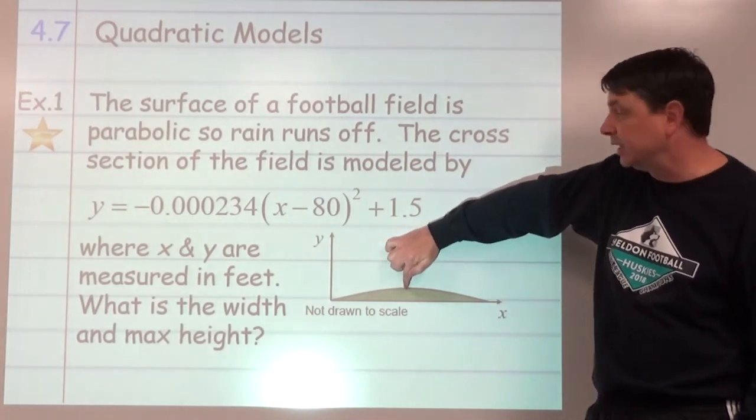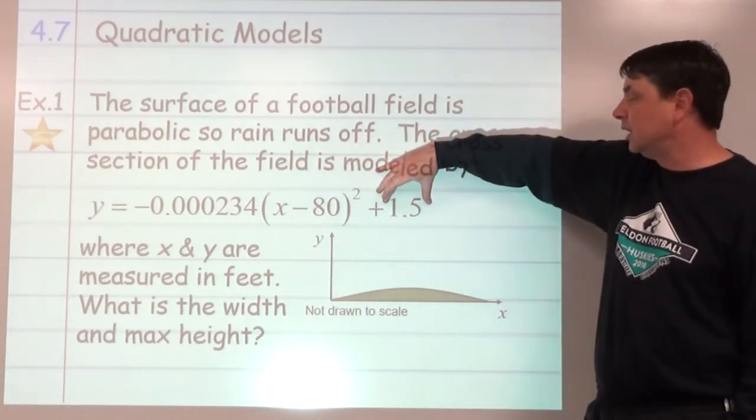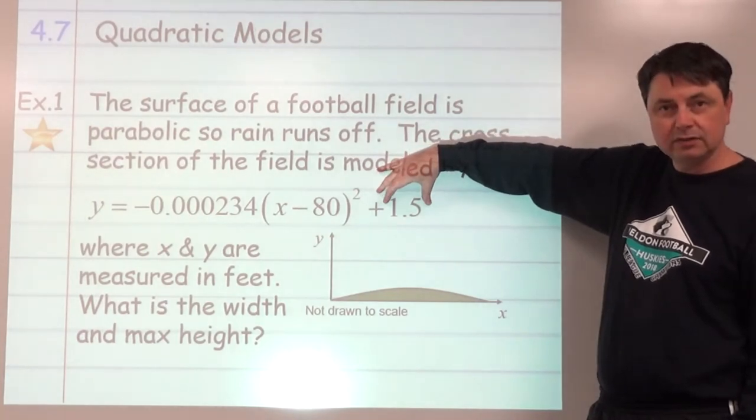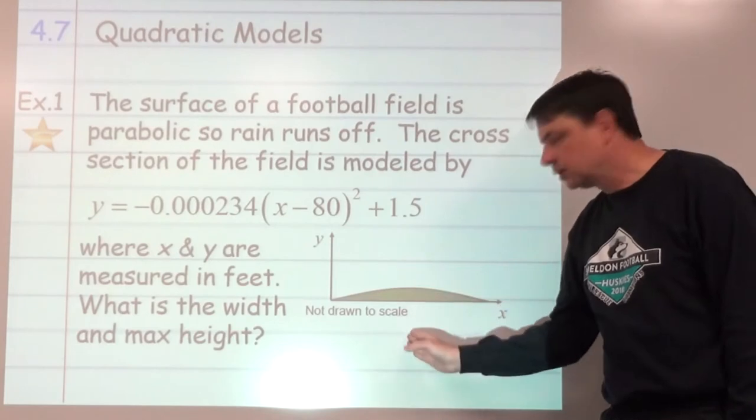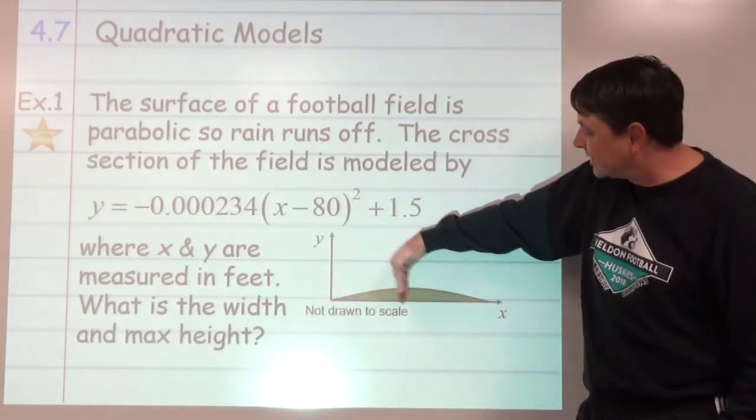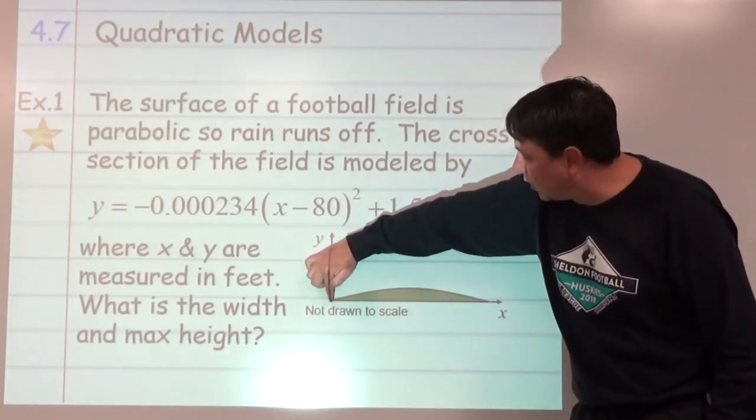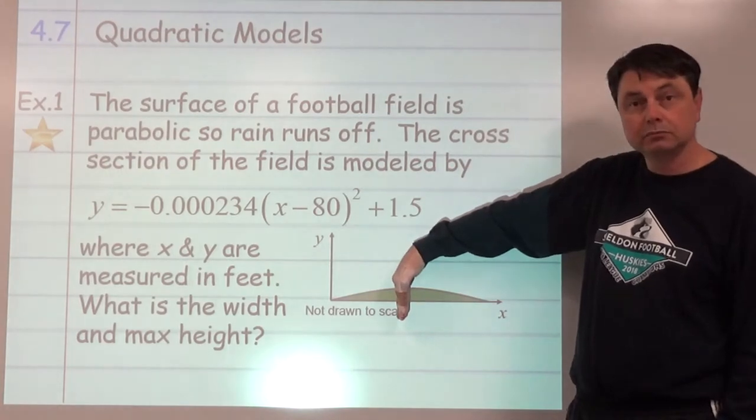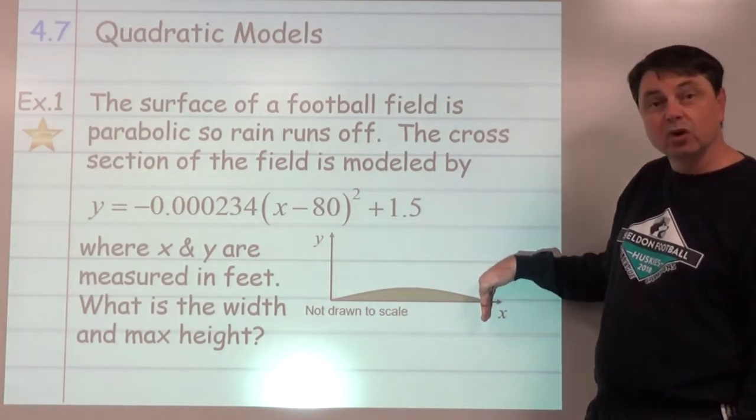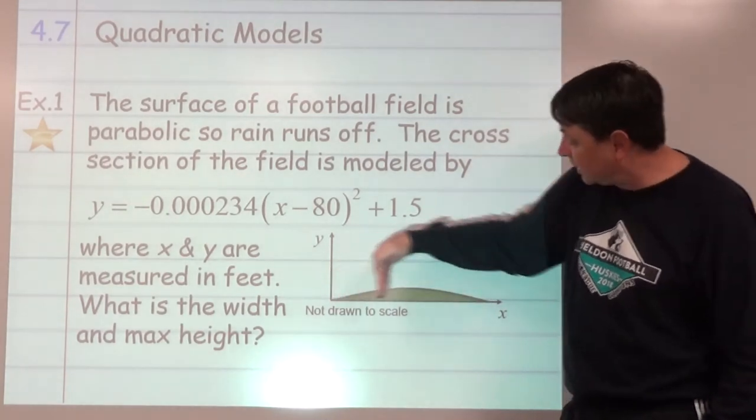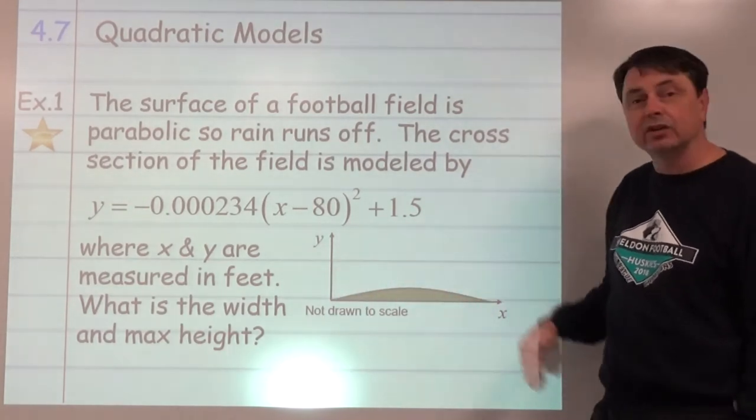It's also giving us the axis of symmetry at 80. So it's 80 feet from one edge to the center and then another 80 feet over to here. If it's 80 feet to the center and another 80 to the other edge, what's the total width of the field?